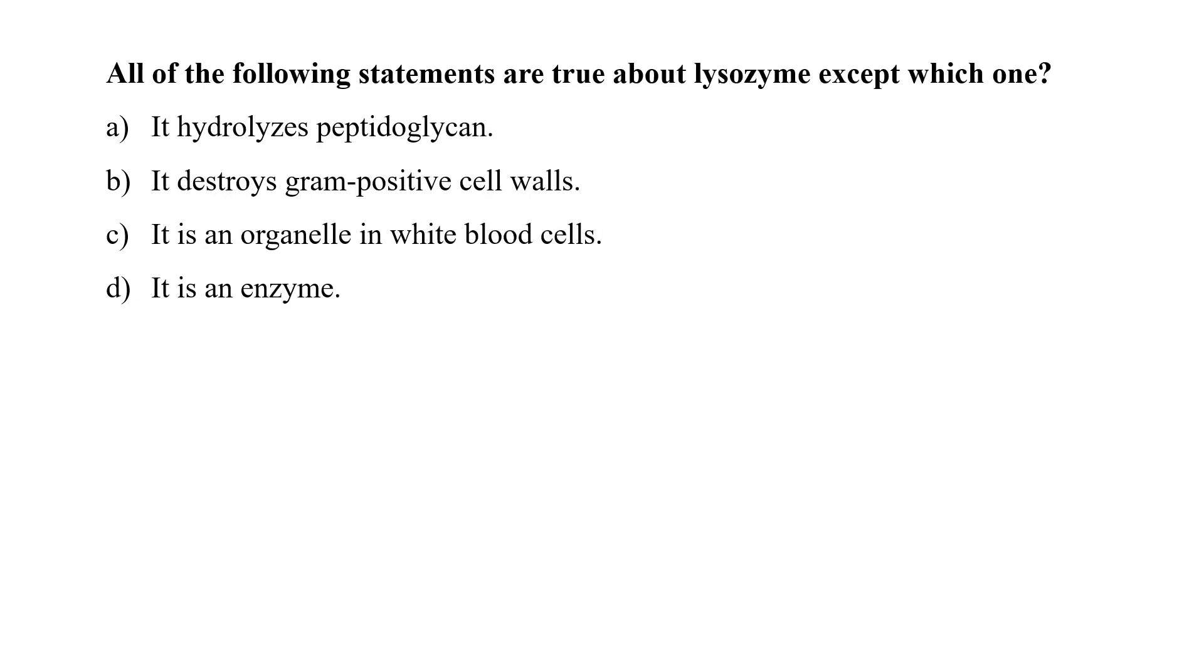All of the following statements are true about lysozyme except which one? It hydrolyzes peptidoglycan, it destroys gram-positive cell wall, it is an organelle in WBCs, or it is an enzyme. Lysozyme is an enzyme which is often present in the body secretion like tears, saliva, or even milk. It hydrolyzes the beta-1,4 glycosidic bond between NAG and NAM of the peptidoglycan layer. Peptidoglycan layer is comparatively more in the gram-positive than gram-negative bacteria and hence, they are very effective against the gram-positive bacteria. The third option that it is an organelle in WBC is the incorrect statement. So option C is the correct answer.